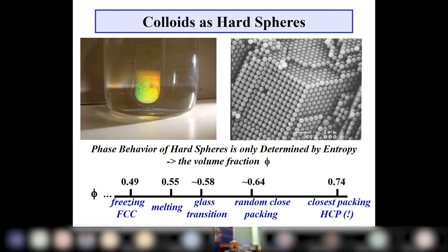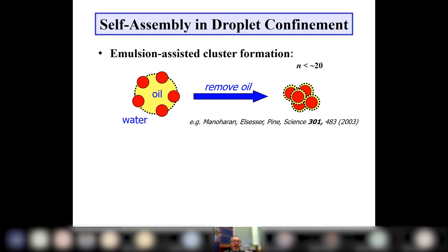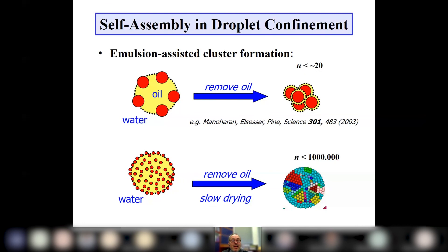Now let's start with the experiments done by Bart Ghonim, slowly drying nanoparticles in emulsion droplets. Putting particles in emulsion droplets is nothing new — there is beautiful work of Dave Pine who found beautiful clusters when drying droplets, with the largest number being about 50 particles. We go to the other limit: making structures from a few hundred to hundreds of thousands of particles. In this case there are particles at the interface, but most particles are in the interior and crystallize.